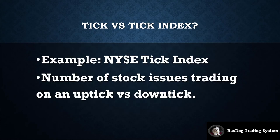One thing to mention before moving on: there is something called the tick index — don't confuse this with tick charts. The NYSE tick index measures the number of stock issues trading at an uptick versus a downtick. On TradingView, for instance, you can get the NYSE tick index, but you cannot get tick charts. So if you see something on TradingView labeled 'tick,' it's really the tick index — a distinction worth knowing as you explore tick charts further.